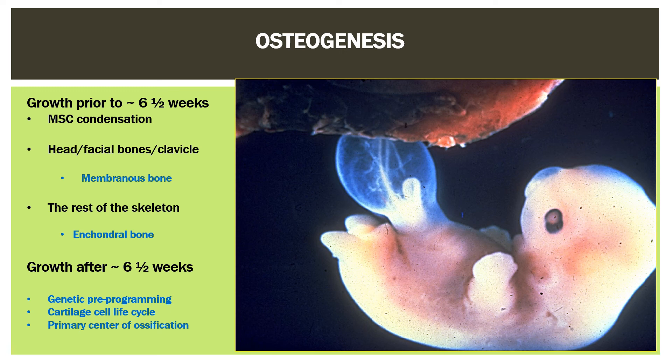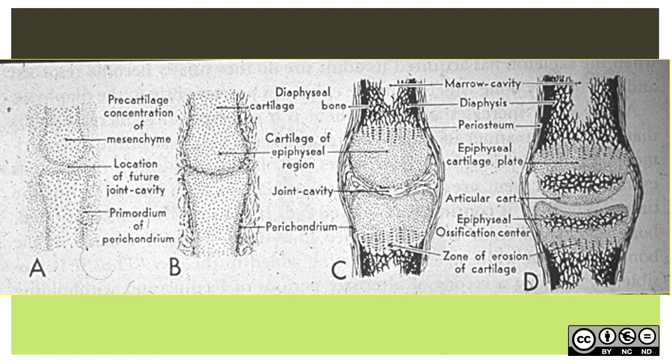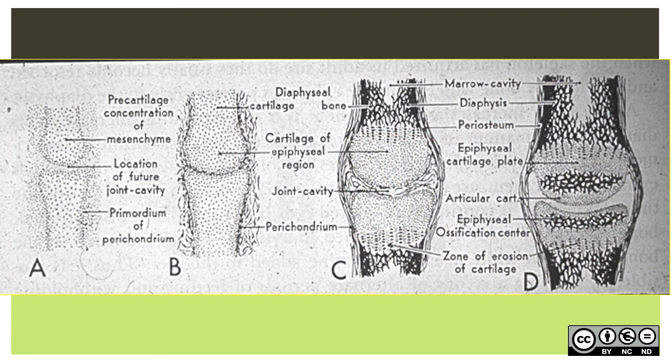In this six-and-a-half-week embryo, osteogenesis is about to begin. Until now, the mesenchyme has undergone preliminary condensation of cells in the head, facial bones, and clavicle, from which bones arise from collagen models. In the rest of the skeleton, the condensing cells will become chondroblasts and form cartilage models. The cartilage models grow significantly — interstitially by chondroblast proliferation and secretion, as well as by appositional addition of cells from the perichondrium.